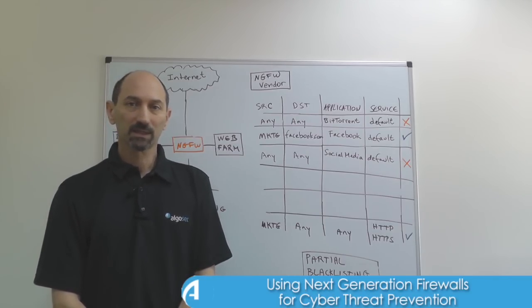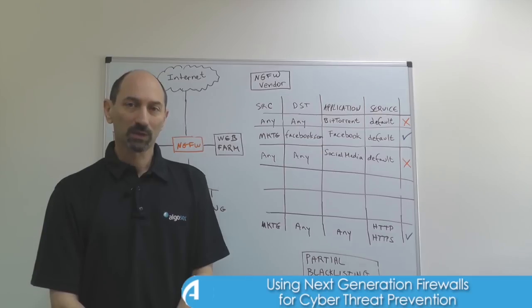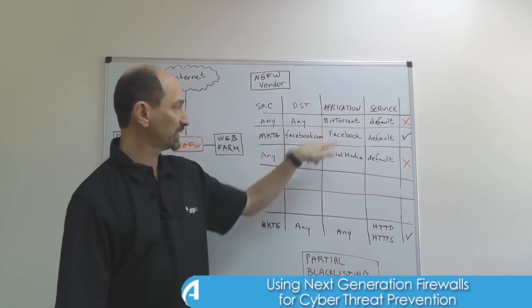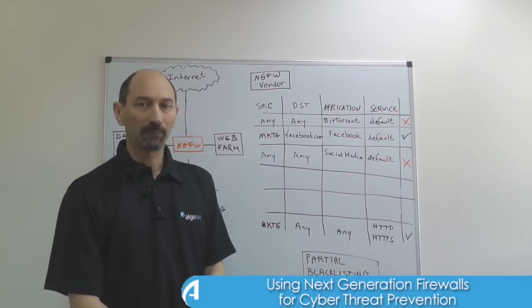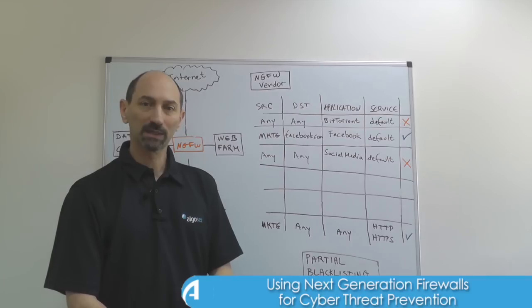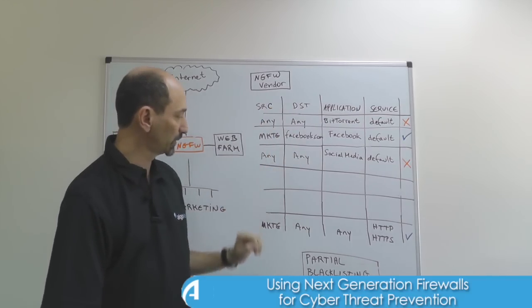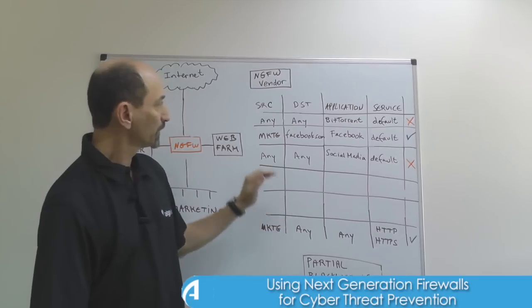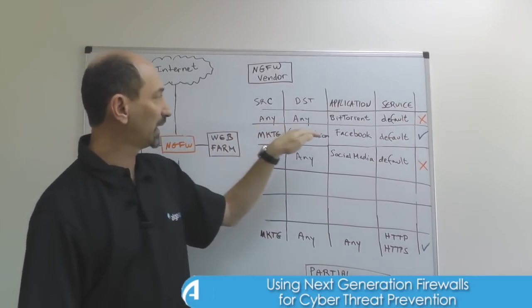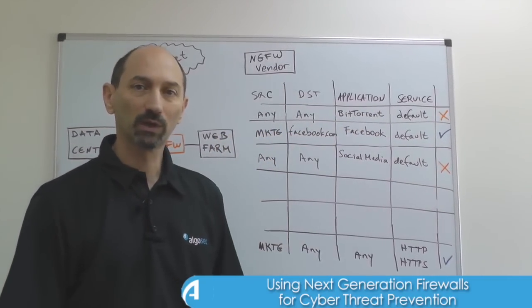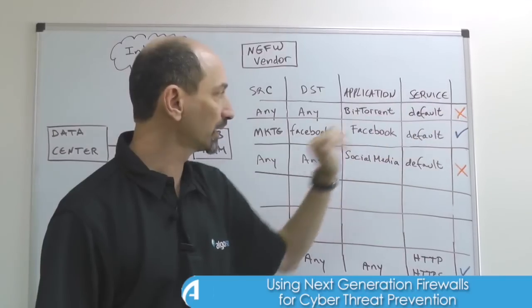In one of our previous lessons, we talked about next-generation firewalls and how they let us filter based on very specific applications. We talked about the blacklisting versus whitelisting approach. Here in this example, you can see a partial blacklisting rule base where we're specifying the particular applications that we're concerned about and explicitly blocking them.